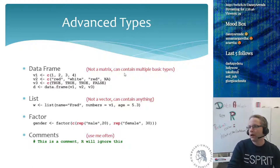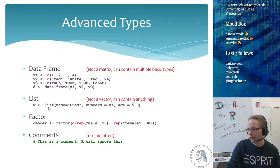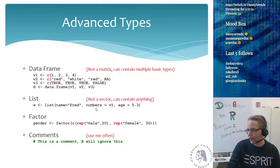A data frame can contain multiple basic types, so each column in a data frame can be of a different type. The list is even more complex — it's similar to a vector, but every element of the list can contain anything. I can make a list where the first position has a character, the second has a vector, the third has a number, and I could even put a matrix in there.